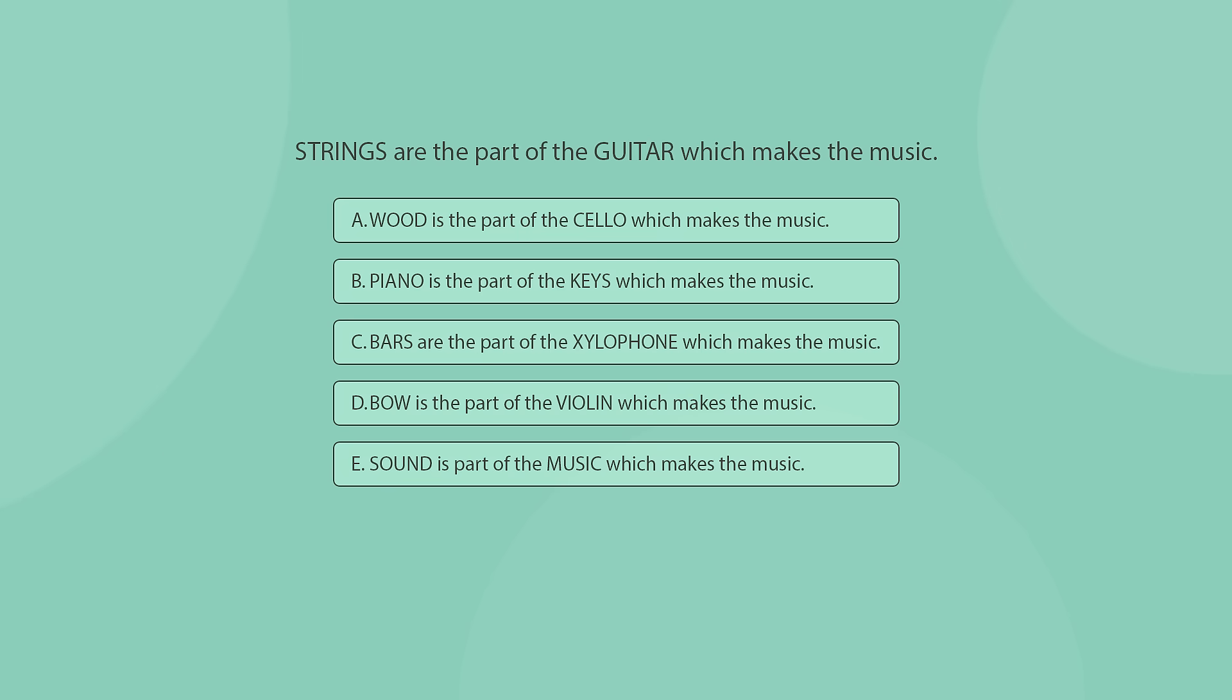It is easy to see that A, B, and E do not form the same logical relationship as the original terms, so we can cross them out. In answer B, you can see that the relationship is correct, but reverse. Keys are the part of the piano which makes the music, not the other way around. That means that the order of the words in the analogy is also important, as well as their content.